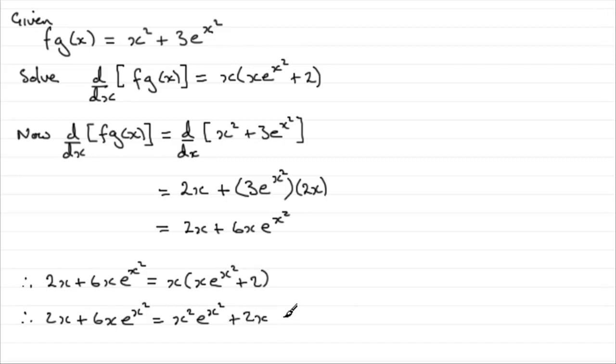And that's quite convenient because if we take 2x from both sides, they're going to essentially cancel one another out, give us 0. I'd also want to subtract this term from both sides. So we would therefore have 6x e to the power x squared minus then this term, x squared e to the x squared equals 0.